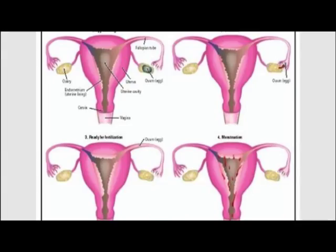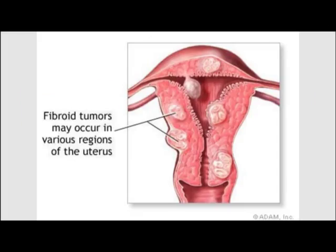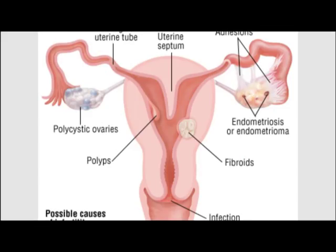If fertilization has occurred, estrogen and progesterone remain high and there is no need for the hypothalamus to secrete LHRH. However, if the egg was not fertilized, then production of estrogen and progesterone drops, triggering the shedding of the endometrium and the start of another menstrual cycle.